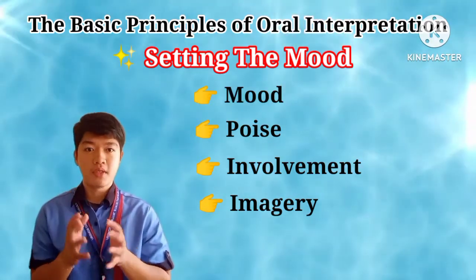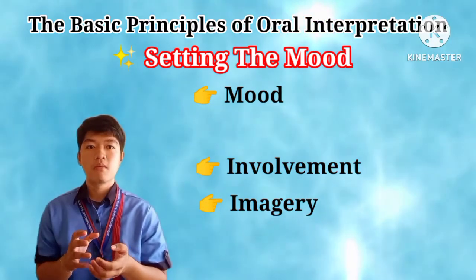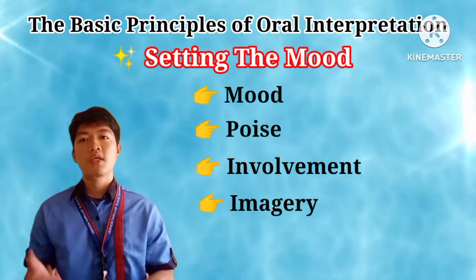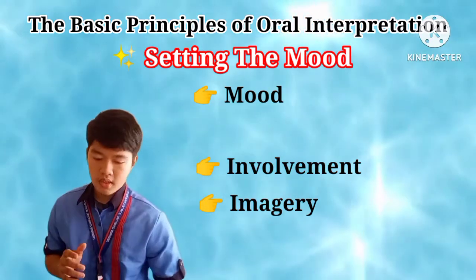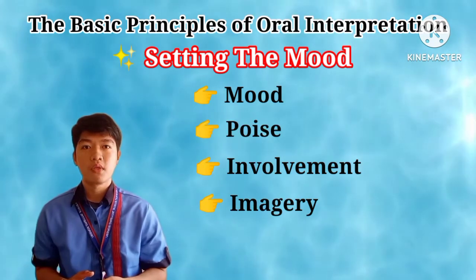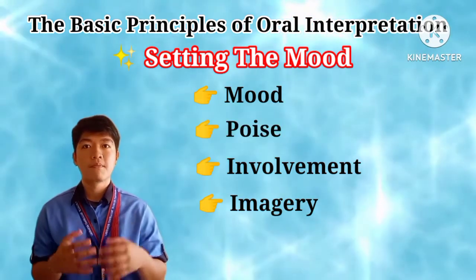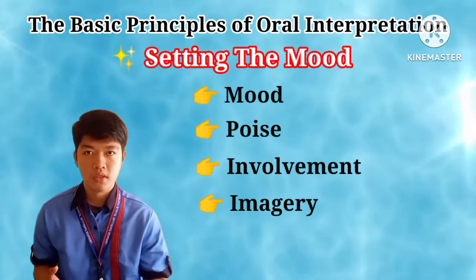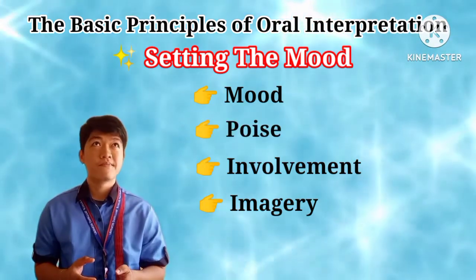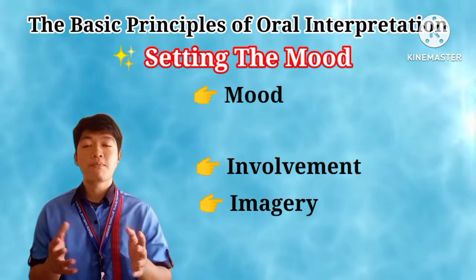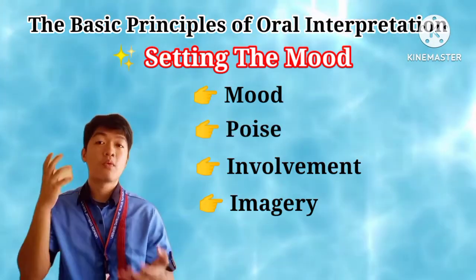Poise refers to an attitude of composure, confidence, and self-possession. In order to become an effective oral interpreter with a literary piece, you need to consider poise. For instance, if you are confident in the piece or story that you are telling, your audience will really get the point and understand what the author is trying to tell towards the audience.